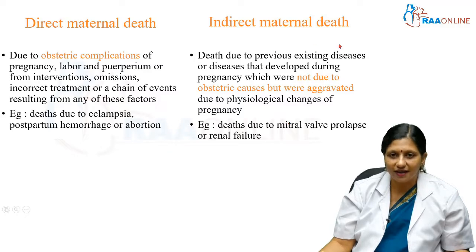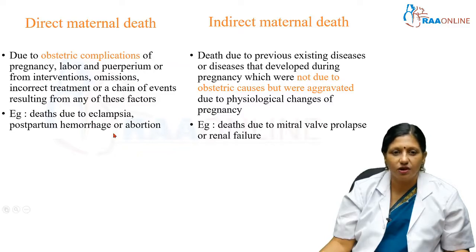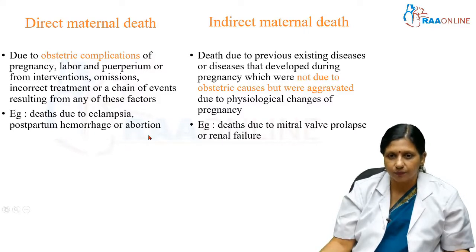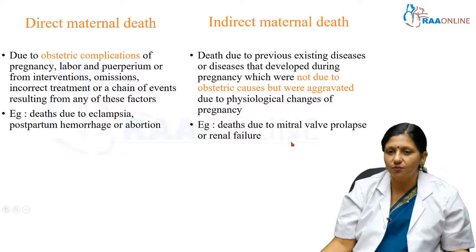Maternal death can have a direct or indirect cause. Direct maternal death is due to obstetrical complications of pregnancy, labor, or puerperium — such as interventions, omissions, incorrect treatment, or a chain of events — for example, death from eclampsia, postpartum hemorrhage, or abortion. Indirect maternal death is due to a pre-existing disease or one that developed during pregnancy, not from obstetric causes but aggravated by the physiological changes of pregnancy, such as death due to mitral valve prolapse or renal failure.